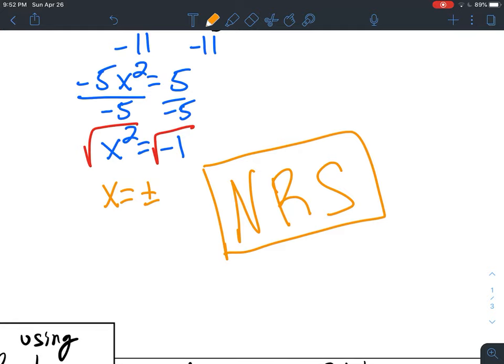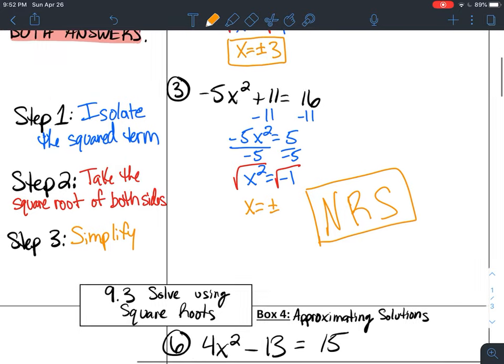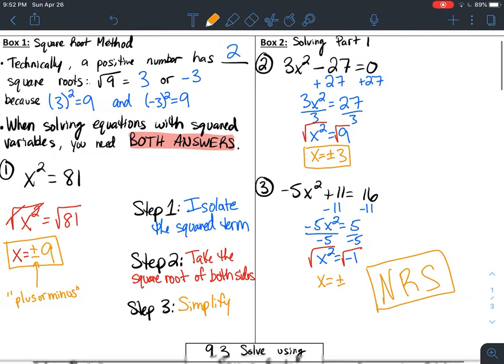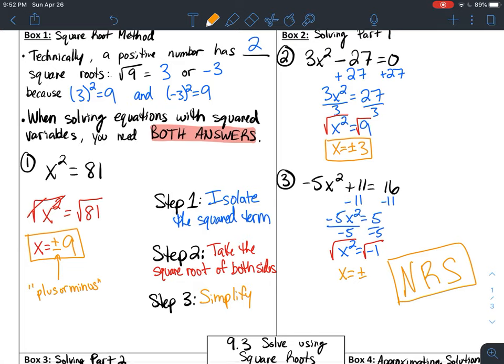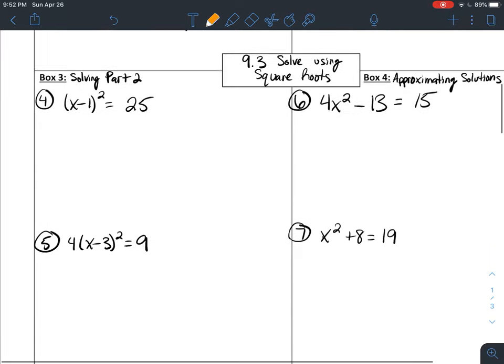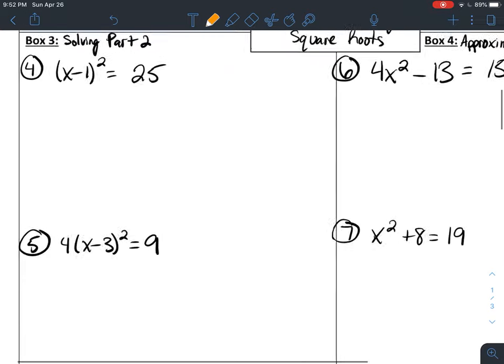There is no real number that we could square to give us negative 1. Now, fun little preview, in Algebra 2 we actually cover how we can handle those. We talk about non-real numbers in Algebra 2, but that is a fun adventure for next year. Buckle up for junior year.